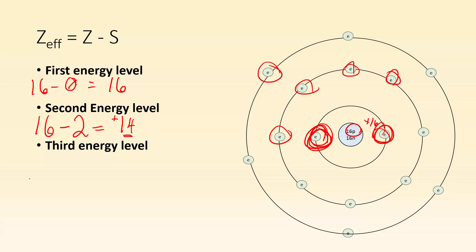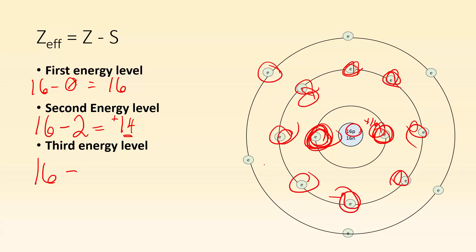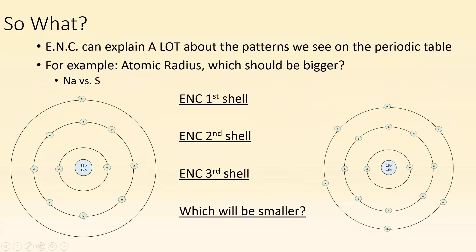Third energy level: same nucleus, so it's 16 minus how many shielding electrons? Counting them: 1, 2, 3, 4, 5, 6, 7, 8, 9, 10 electrons that are shielding and in the way. So the third energy level is experiencing a plus 6 nuclear charge. The effective nuclear charge for that third ring in this example is plus 6.